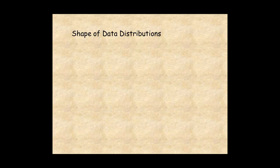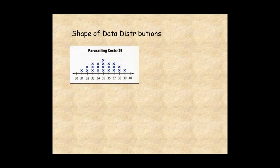For example, this data set is symmetrical. If you draw a vertical line through the middle of the data, the left side looks like the right side.